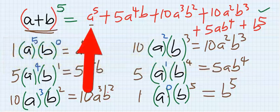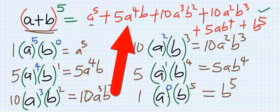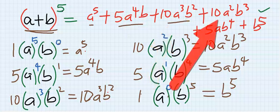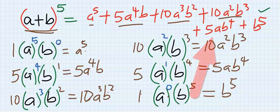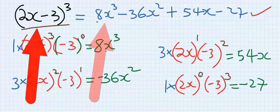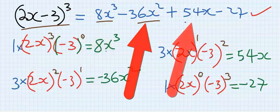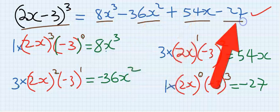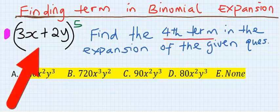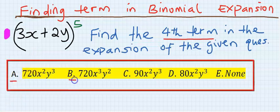This is the first time, this is the second time, this is the third time, this is the fourth time — counting through the binomial expansion. This is the fifth and sixth time of this binomial expansion. Find the fourth term in the expansion of the given question, and we have A, B, C, D, E options to choose from.